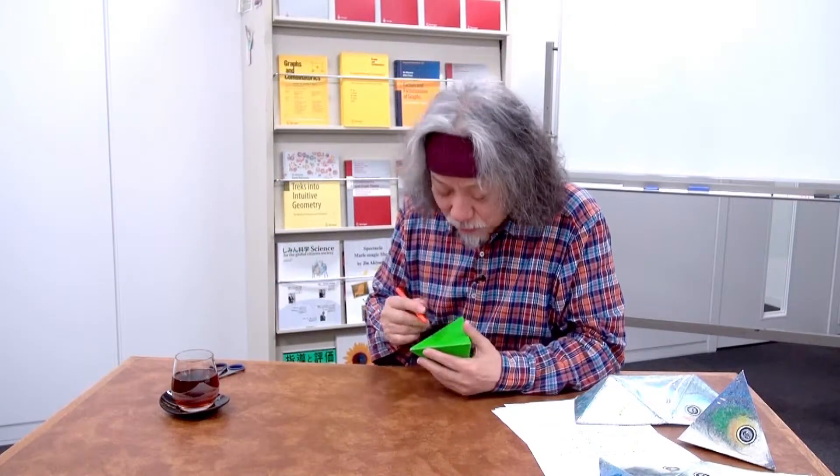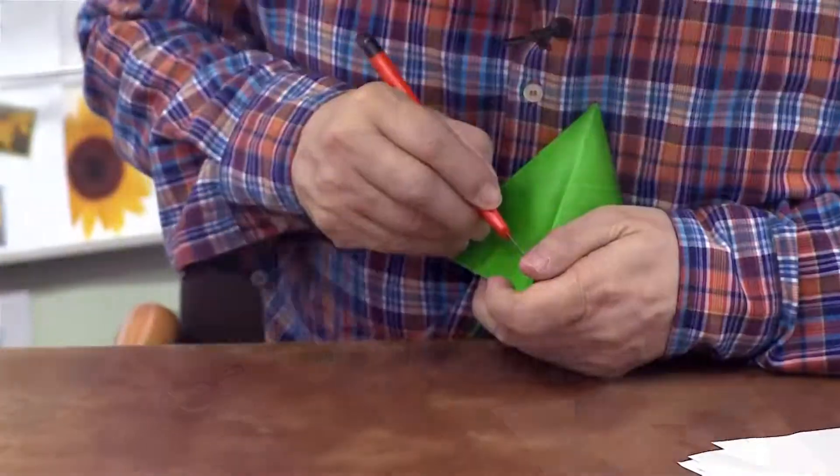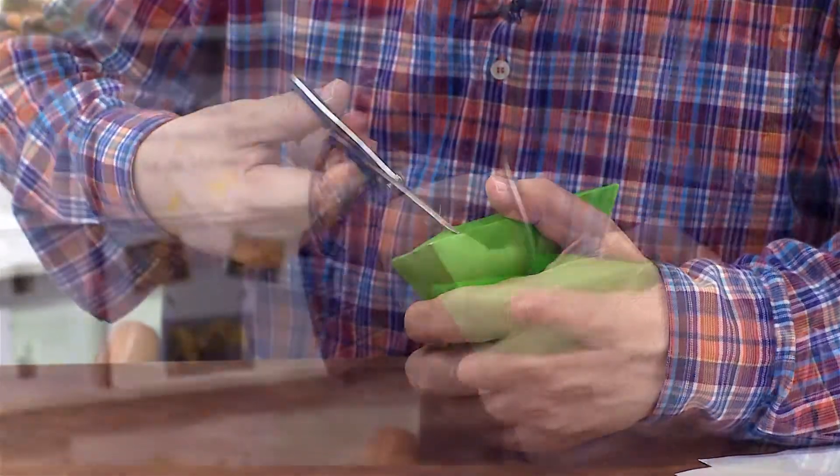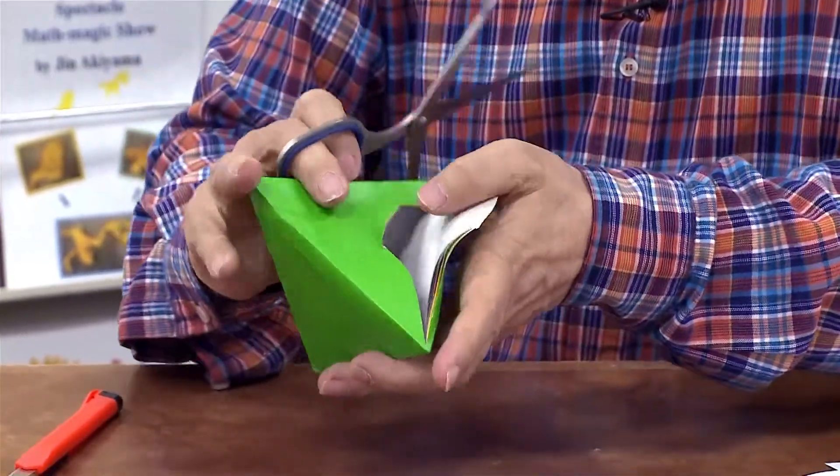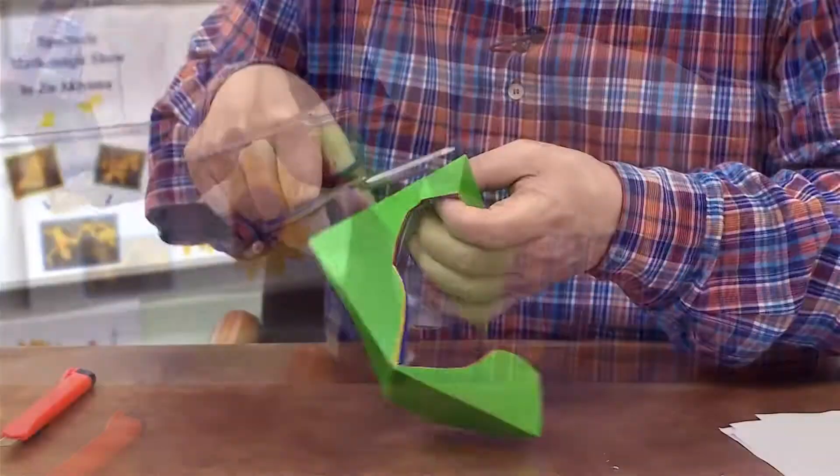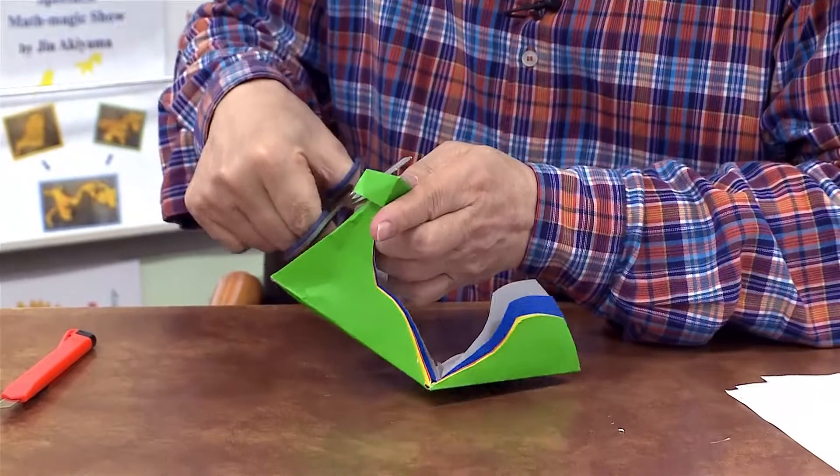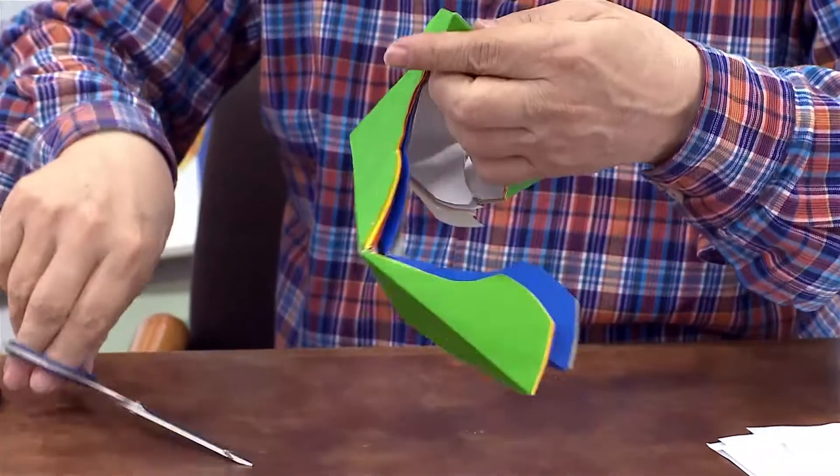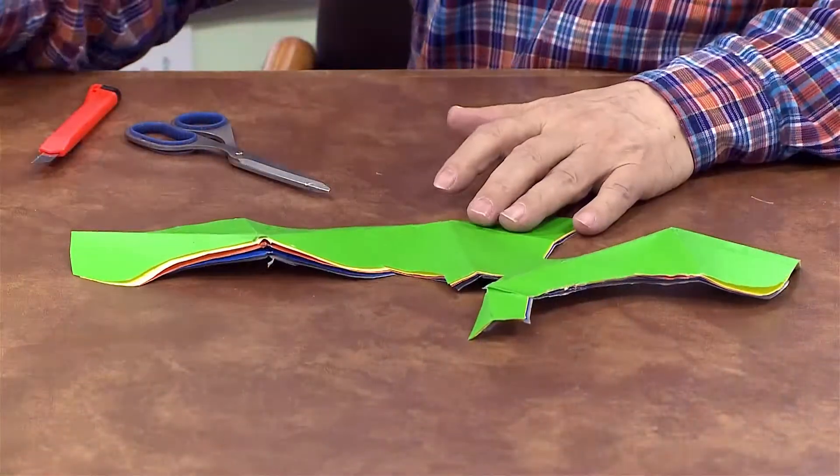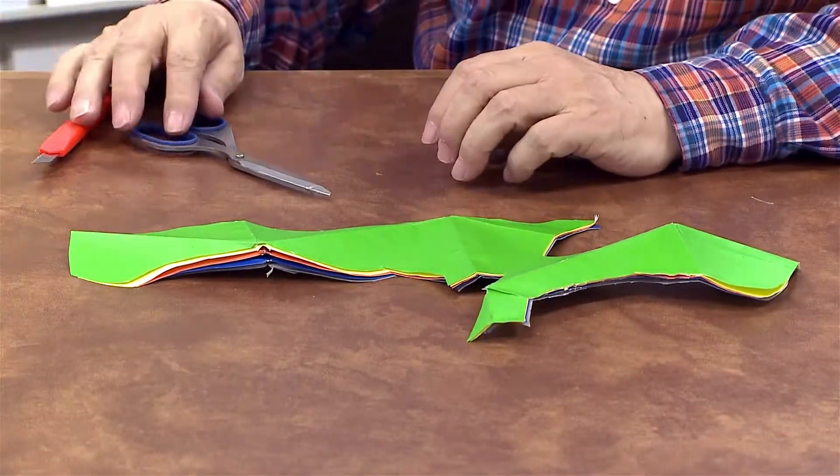You might ask, can we really cut it any way we like? Yes, you can. Because this is a tetrahedron, when the scissors reach the four vertices, it opens up flatly. I've intentionally cut it in a strange way. This is to emphasize that it can be cut any way. It has now become flat. The shape is like this.